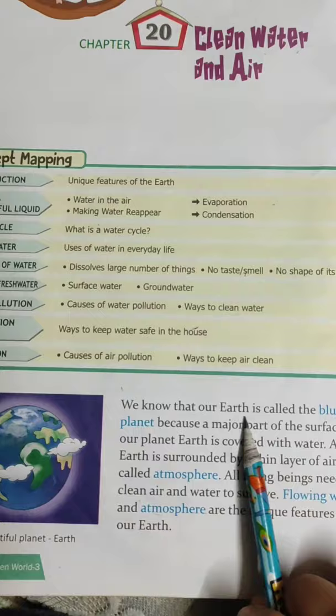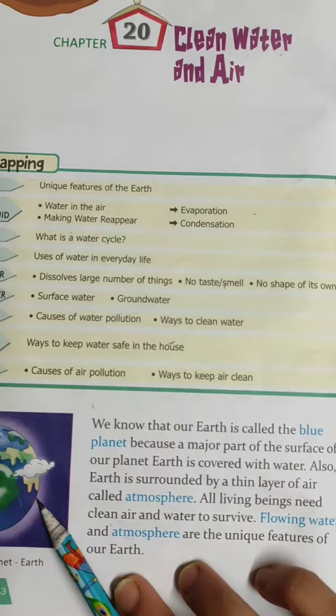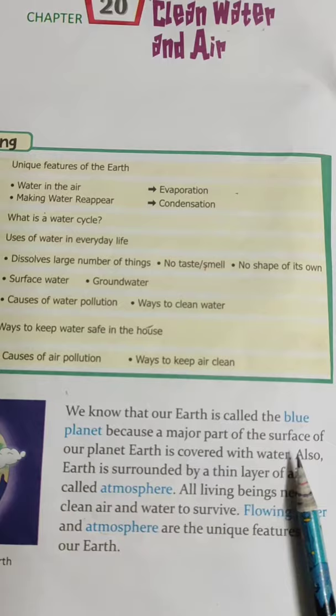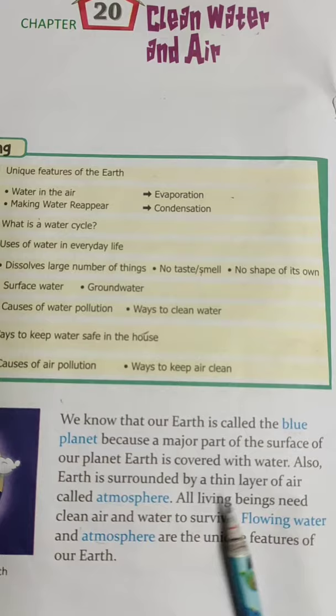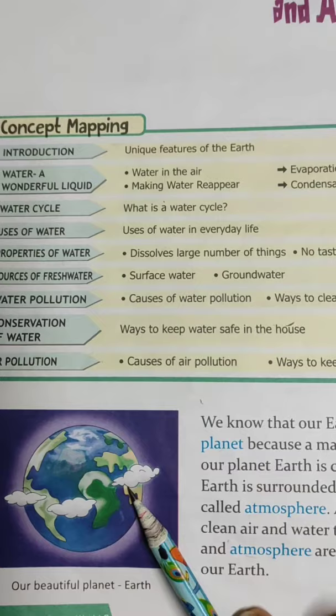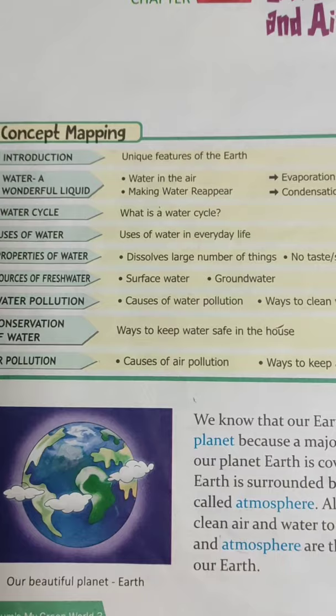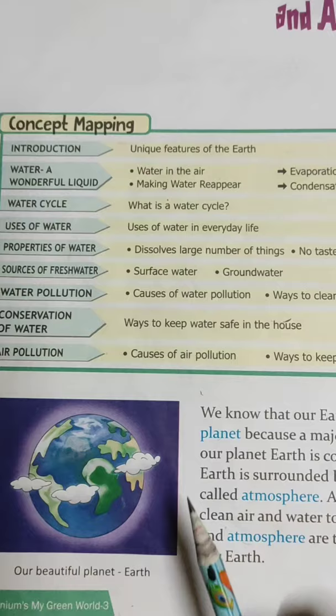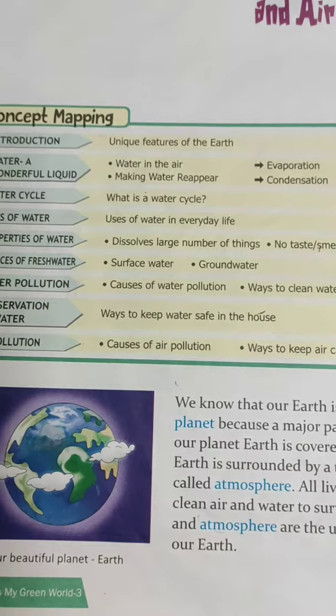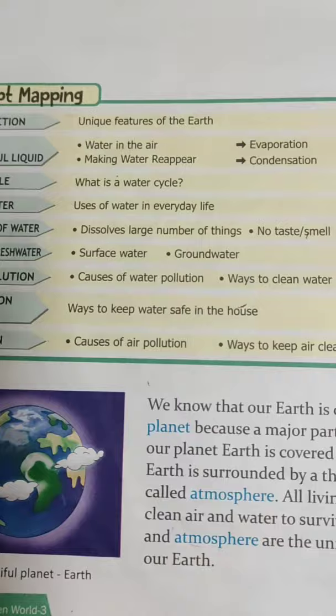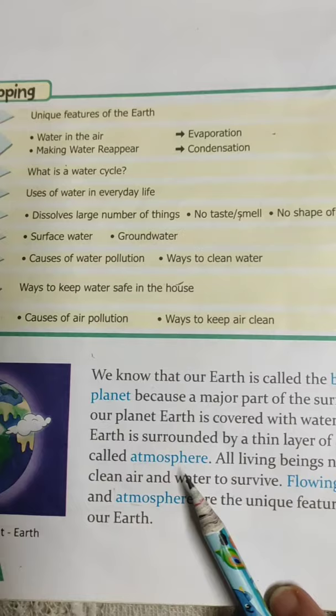We all know earth is called the blue planet. Earth ko blue planet kaha jata hai kyunki earth ka zyada tar hissa paani se dhaka hua hai. Because the major part of the surface of our planet earth is covered with water. Also, earth is surrounded by a thin layer of air called atmosphere.